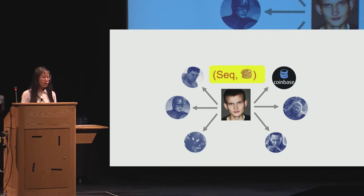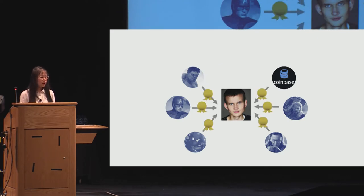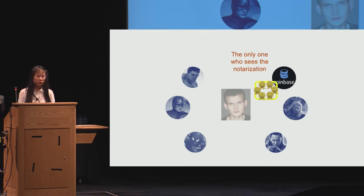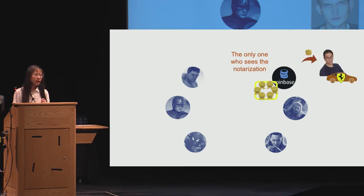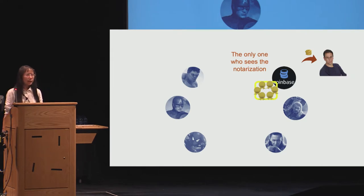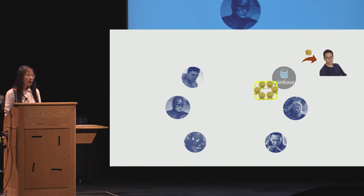In this scenario, a transaction comes, the proposer proposes it, voters vote for it, a notarization is formed, and the notarization is sent back to voters. But right after sending the notarization to the Coinbase node, the proposer drops offline. At this point, the Coinbase node becomes the only one who has seen the notarization. The Coinbase node thinks the transaction is confirmed and tells the user — someone wanted to buy a Ferrari car. The user thinks they received the money and delivers the car. But unfortunately, right after notifying the user, the Coinbase node also drops offline.